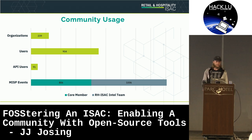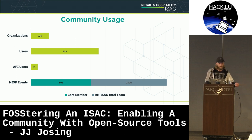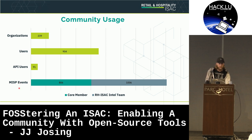I want to talk about our community usage over the last year. At the RHISAC Cyber Intel Summit last year at the beginning of October 2023, we officially launched our community instance. Over the last year, 239 organizations have had at least one person log in — out of 251, that's a pretty high number. We've had 904 users log into MISP at least once, and around 91 API users currently. The bottom of the slide is a breakdown of the different MISP events.